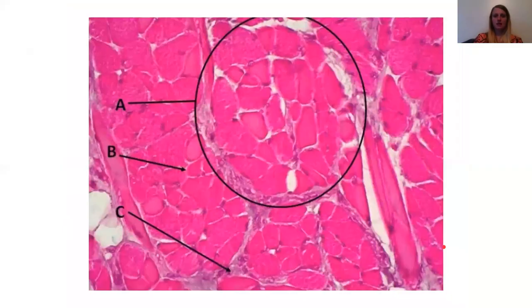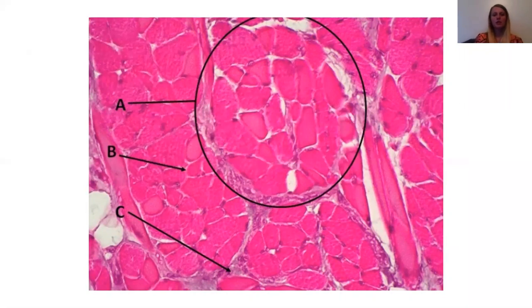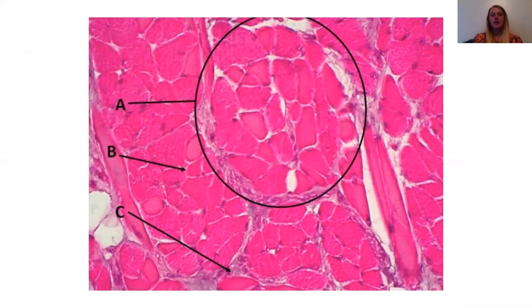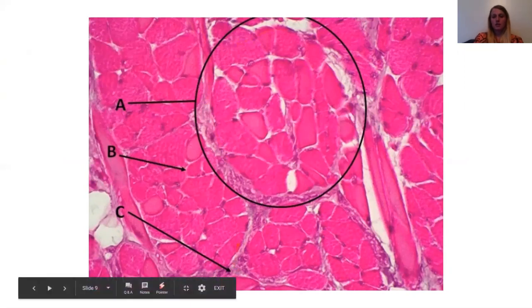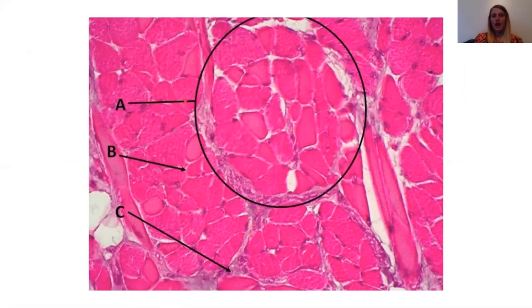On your quizzes, they'll have lots of things that point to things that are sometimes hard to tell what you're pointing to. Sometimes people get confused if they are asking you for a perimysium or a fasciculus or fascicle. But if they are asking for the fascicle, they will put a circle around it and be like, name this structure. But if they're looking specifically for the perimysium, they'll just put an arrow towards it.